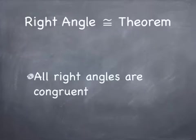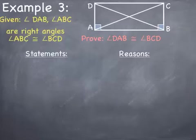The right angle congruence theorem states that all right angles are congruent. To be a right angle, it has to measure 90 degrees. So all right angles have a measure of 90 degrees, and if all right angles have the same measure, then all right angles are congruent. Example 3 says we are given that angle DAB and angle ABC are right angles, and that angle ABC and angle BCD are congruent. We are asked to prove that angle DAB is congruent to angle BCD.